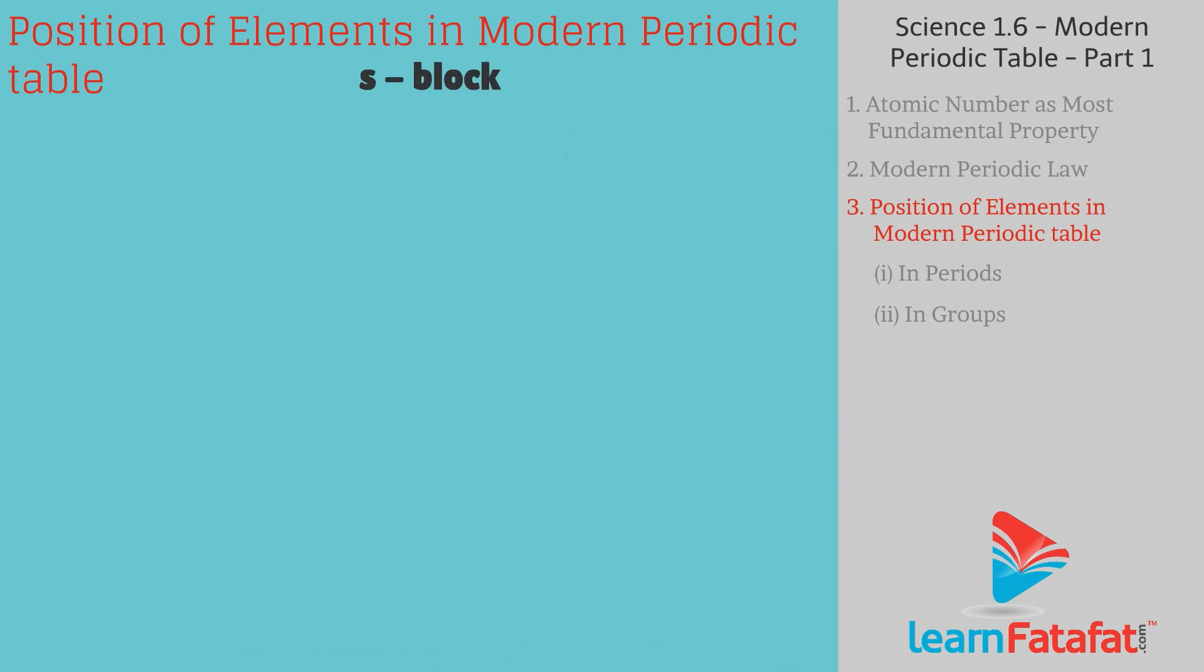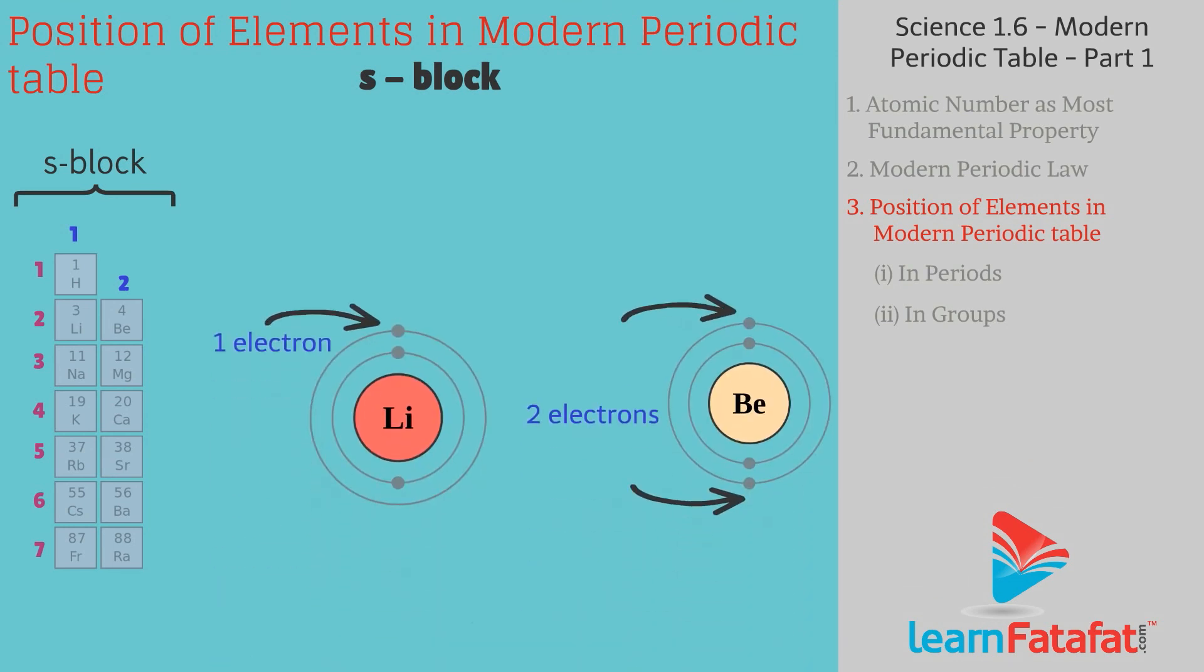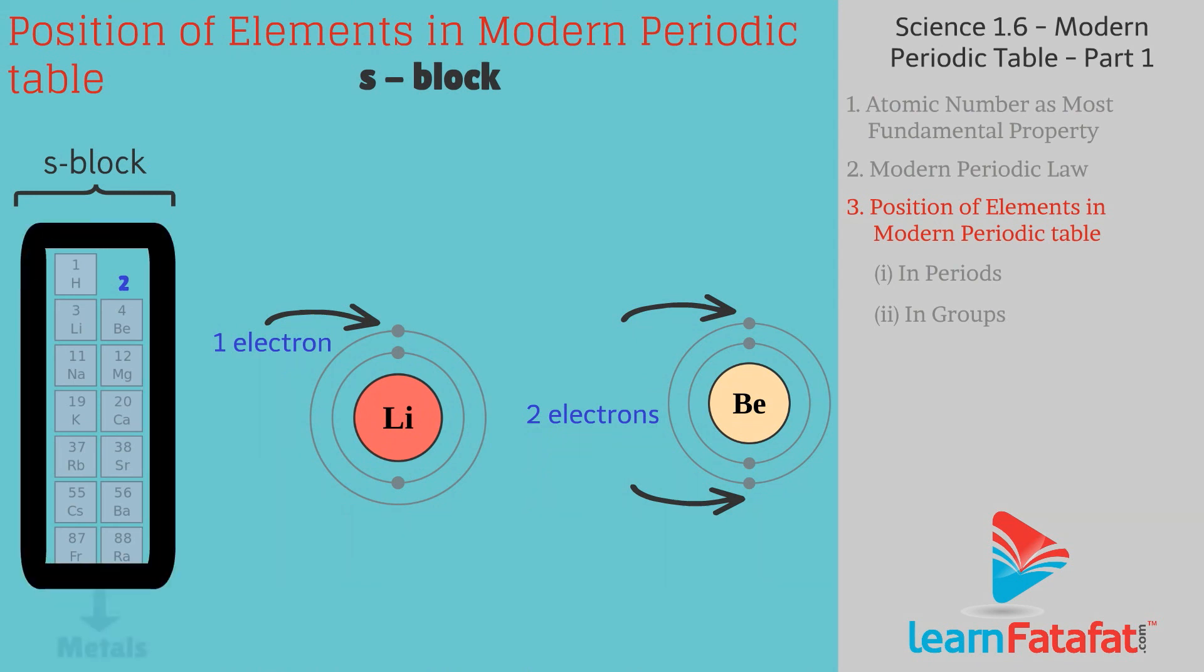S block: Elements of groups 1 and 2 are called S block elements. S block elements contain 1 or 2 electrons in its outermost shell. Elements of S block are all metals.